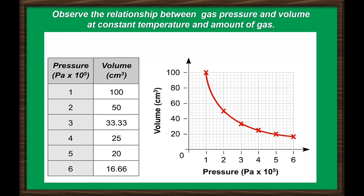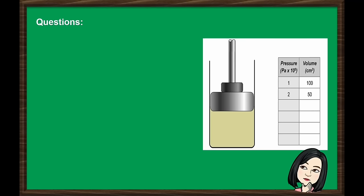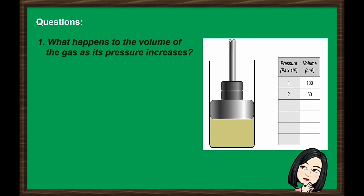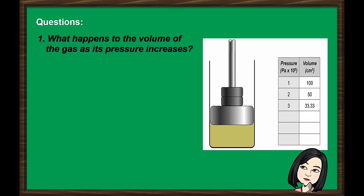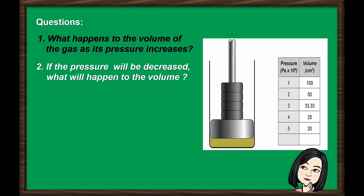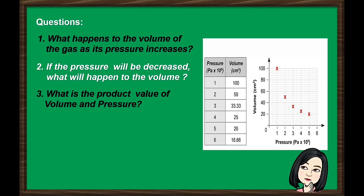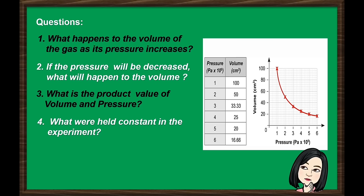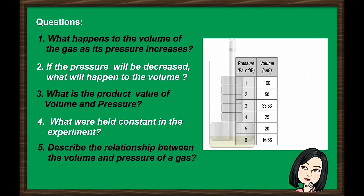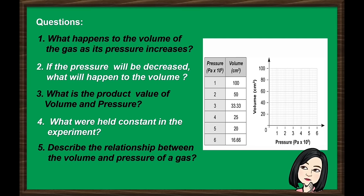Answer the following questions. Number 1: What happens to the volume of the gas as its pressure increases? Number 2: If the pressure will be decreased, what will happen to the volume? Number 3: What is the product value of volume and pressure? Number 4: What were held constant in the virtual experiment? And lastly, describe the relationship between the volume and pressure of a gas based on the graph. You may pause this video as you answer the questions.